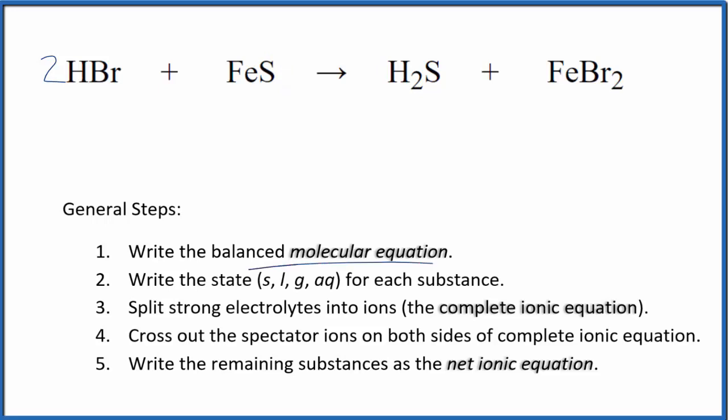Now we need to write the state for each substance. We're going to assume that this will be aqueous. HBr, it's a strong acid, so it'll dissolve and dissociate. We're going to say that it's aqueous here. For FeS, this is iron 2 sulfide. Sulfides in general, unless they're bonded to elements in group 1, they're going to be insoluble. So let's call this a solid here.